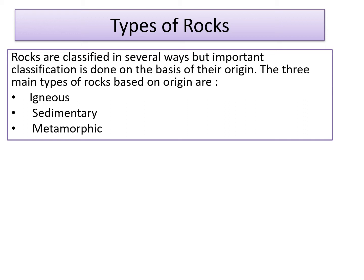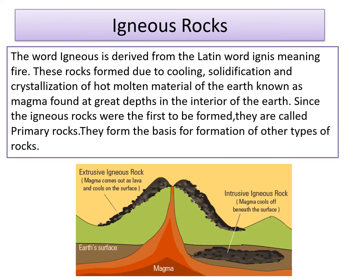Rocks are classified in several ways but the important classification is done on the basis of their origin. The three main types of rocks based on origin are igneous, sedimentary and metamorphic rocks. We start with igneous rocks. The word igneous is derived from the Latin word ignis meaning fire. These rocks were formed due to cooling, solidification and crystallization of hot molten material of the earth known as magma, found at great depths in the interior of the earth.